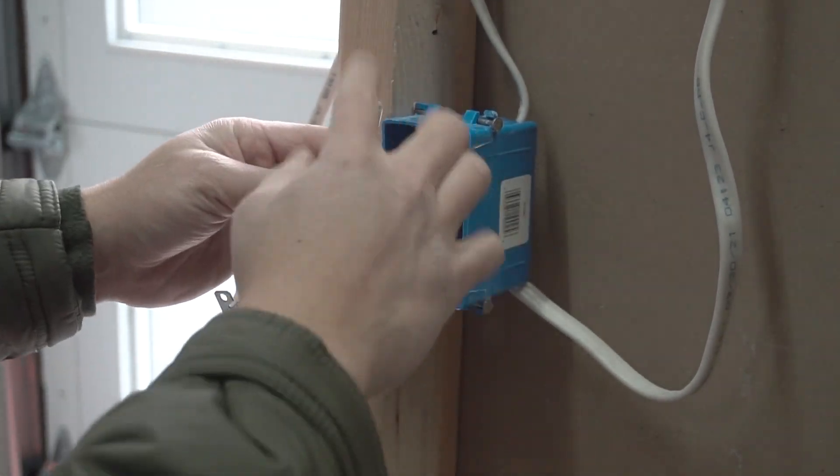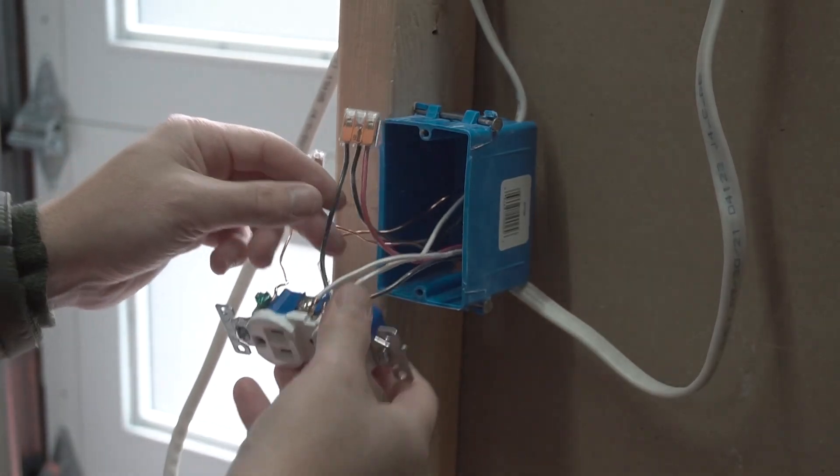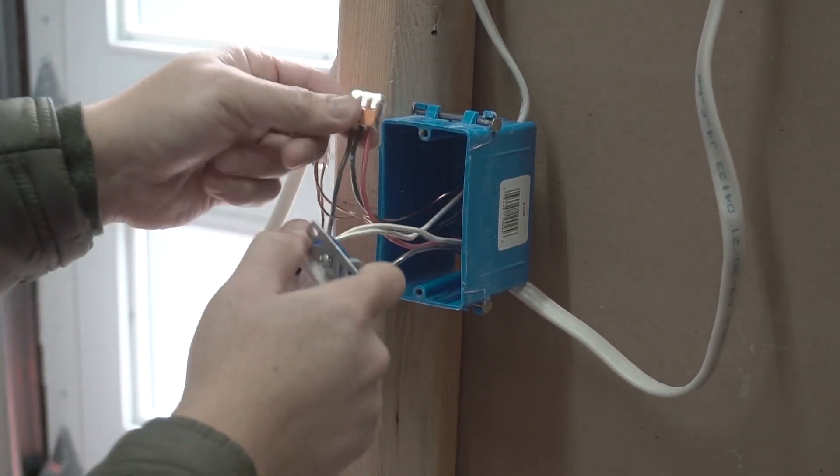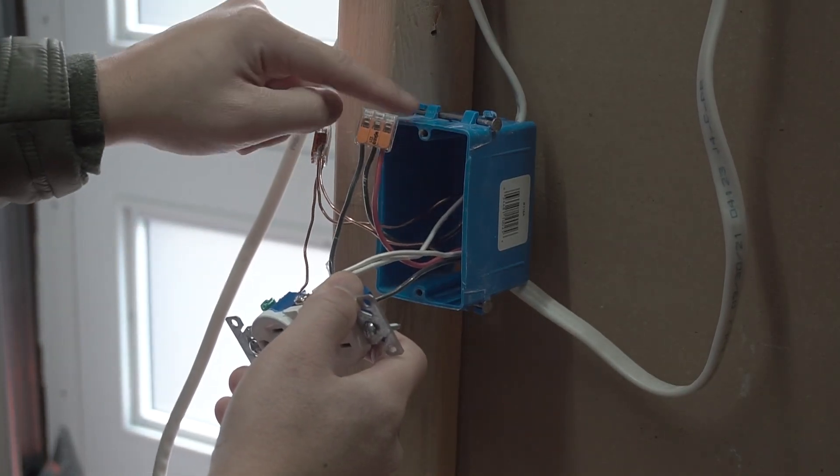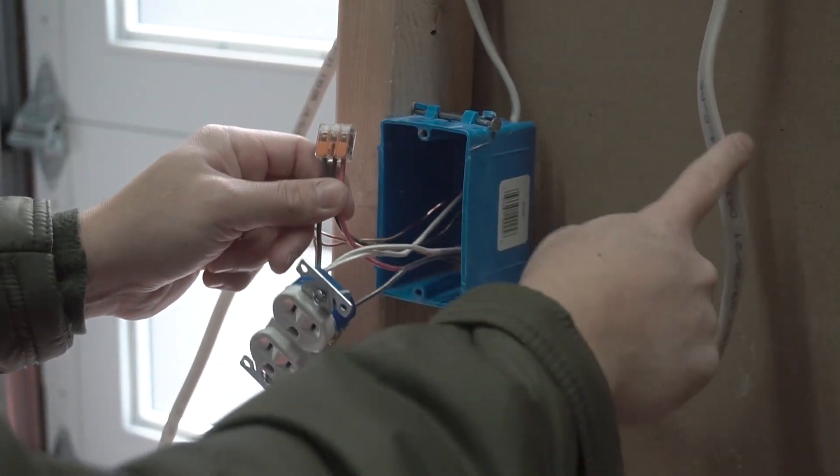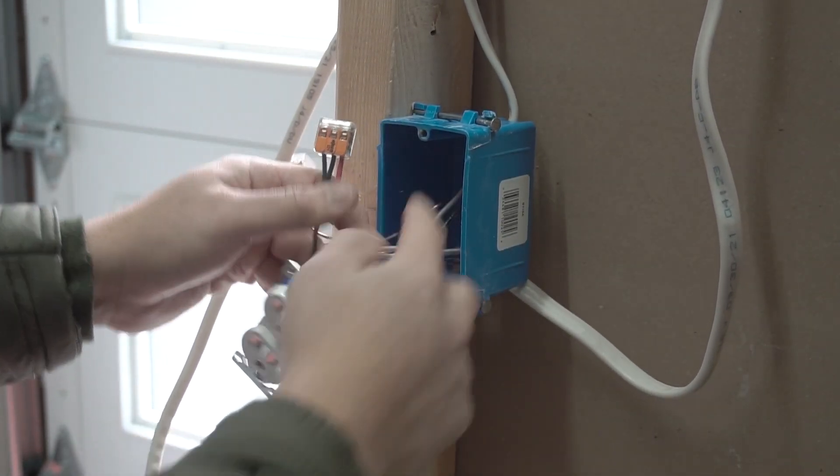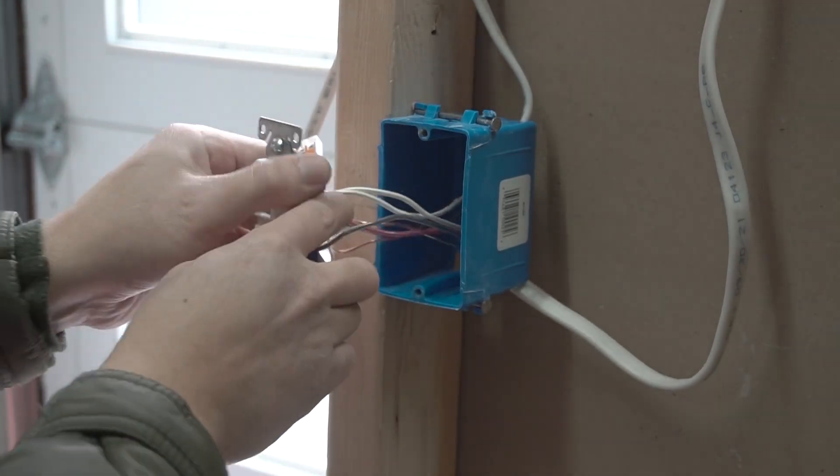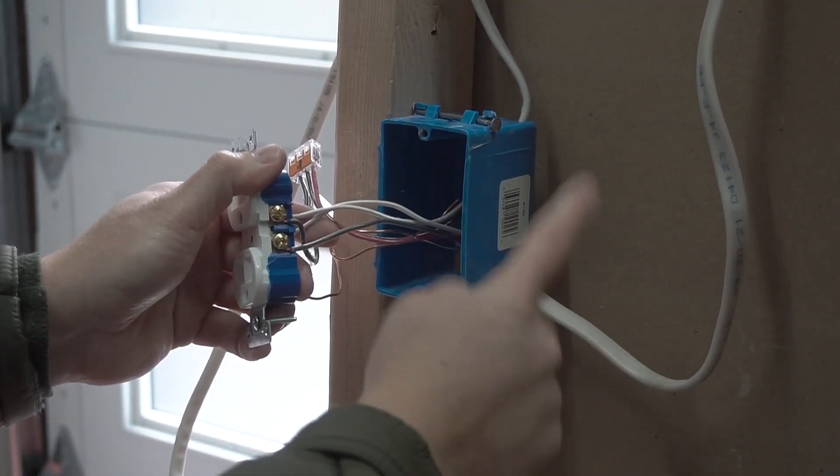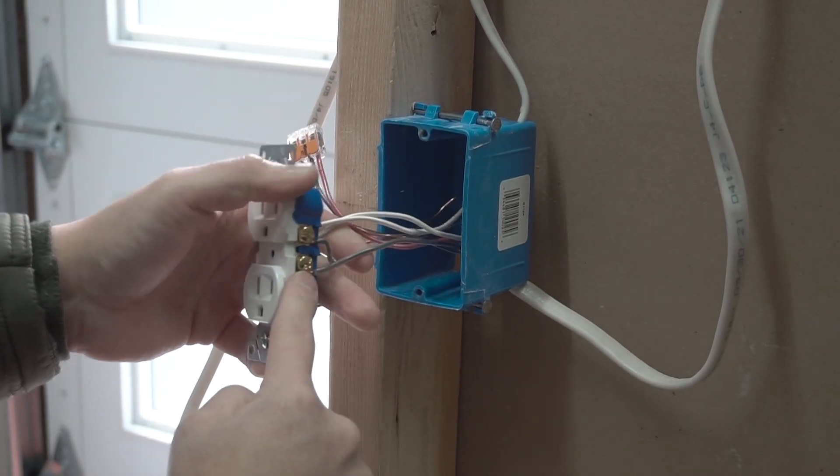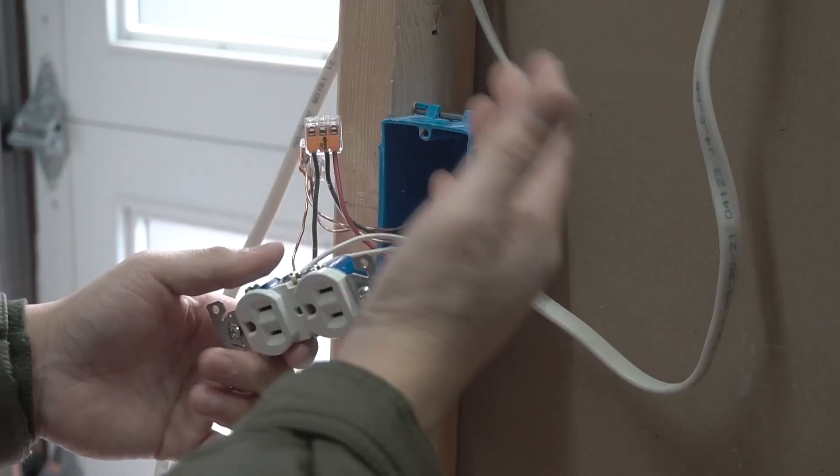Now we have our black hot wiring. The black wire from this outlet that's pigtailed is connected to the black hot wire 14-2 power source, and the red hot from the 14-3 is also connected onto here. And that black hot wire from the 14-3 is connected onto the bottom terminal of this outlet.